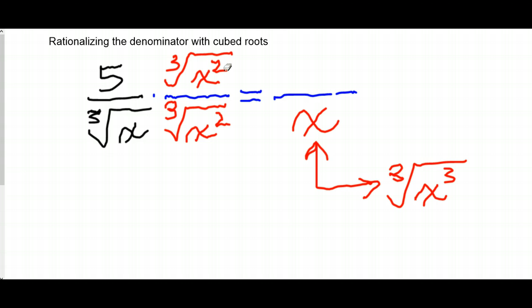And once I do that, cubed root of x times cubed root of x squared equals cubed root of x cubed, which is x. And then there's not much to do in the numerator. It's just going to be 5 times cubed root of x squared. And that's how we rationalize a denominator with a cube root.